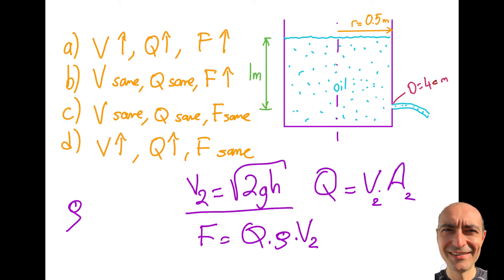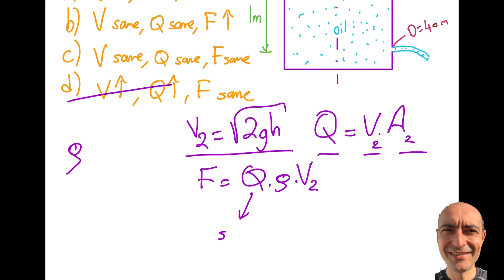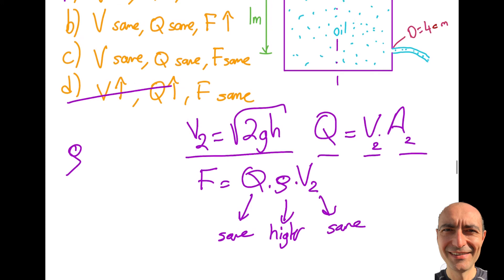So you can see that part A — velocity — is going to stay the same; it doesn't go up. And since V is not going up and the area is constant, Q is going to be the same as well. But what happens to the force? The Q is the same, we said this is the same. Density — we said it's going up, a higher value mathematically speaking — and V2 is the same. So then you're going to see that your force is going to go up.